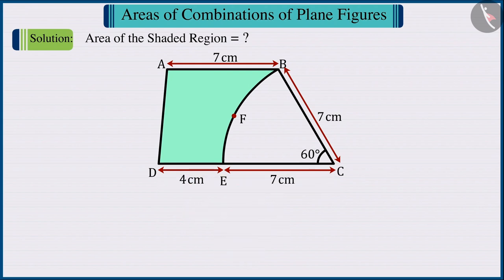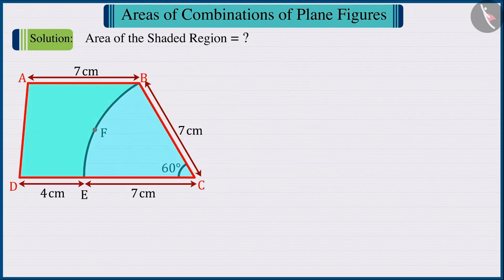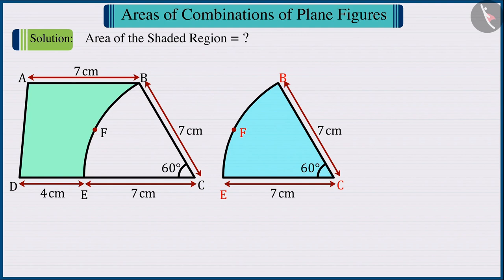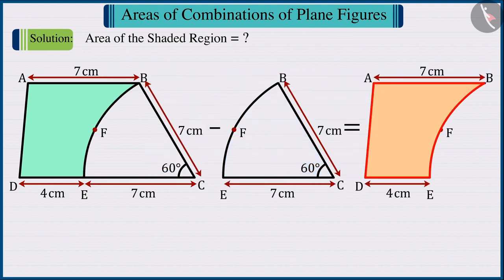Looking at the figure, we can say that the shaded region is obtained by subtracting the area of sector CBFE from the area of trapezium ABCD.